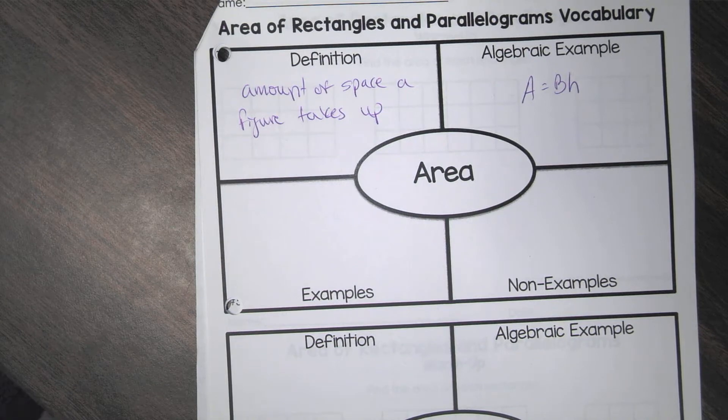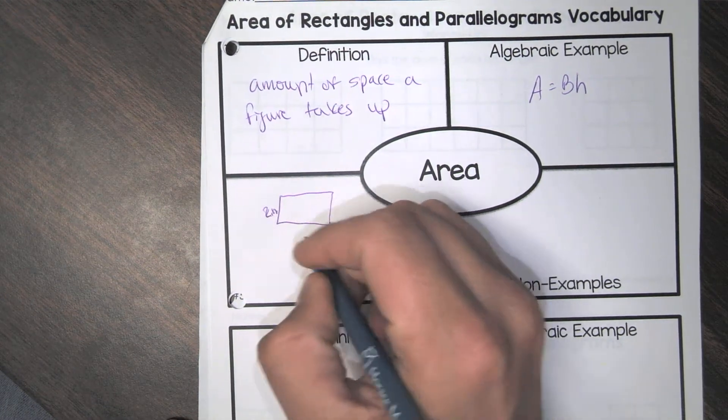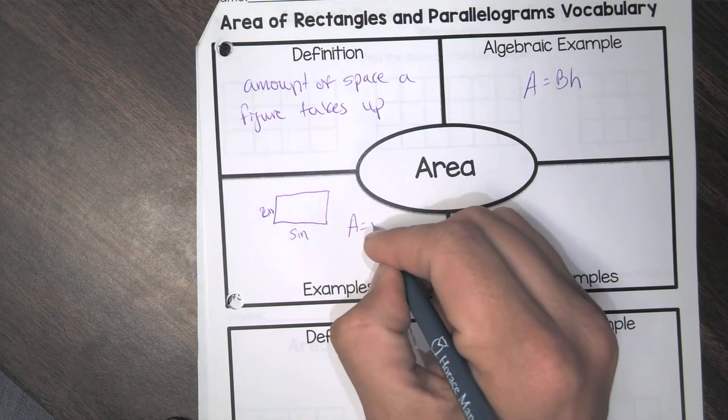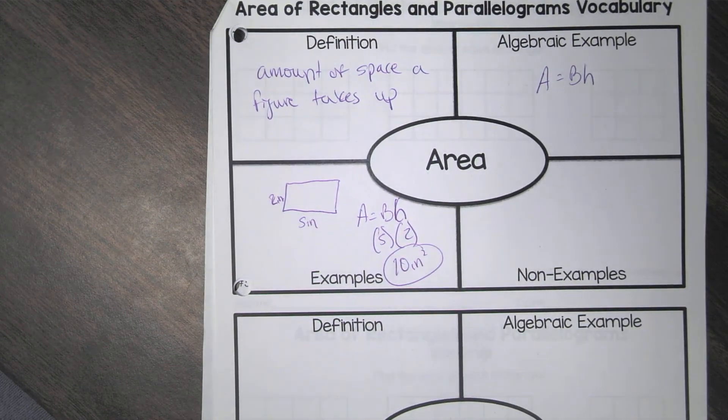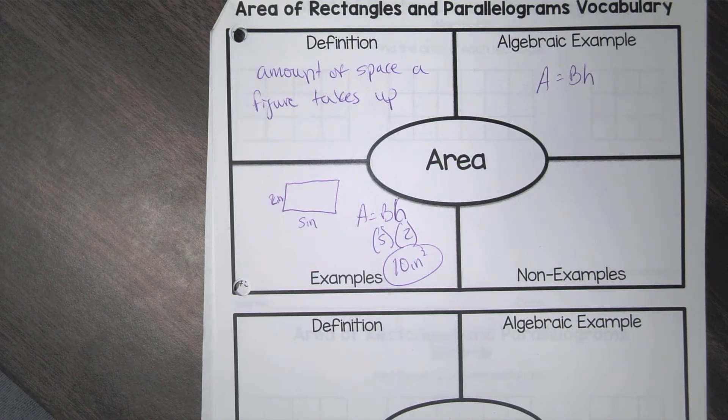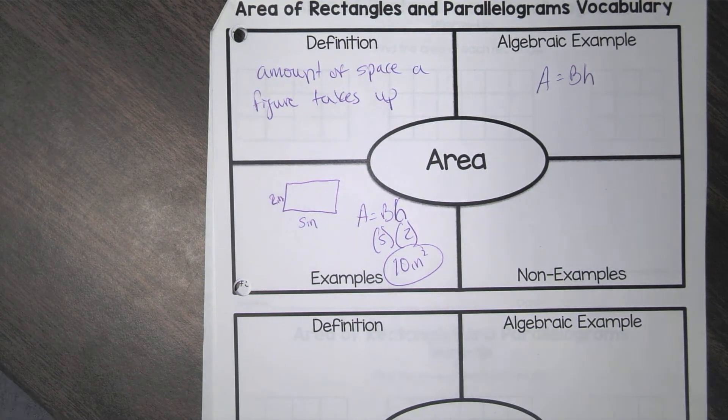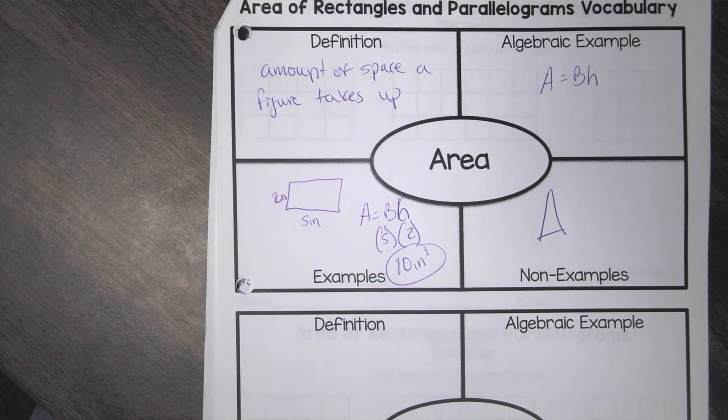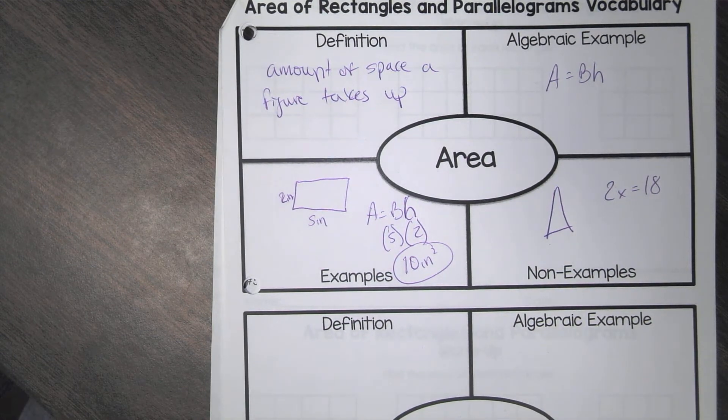So an algebraic example would be just put the formula. A equals base times height. An example would be you can literally draw up a rectangle. So that's two inches. This is five inches. And you just find the area. So the base is five. Height is two. So you get ten inches squared. That's an example. What would be a non-example? Of area. We could do 2x equals 18. That's just an equation. It has nothing to do with area. So there's a ton of stuff that does not deal with area. So that's area.